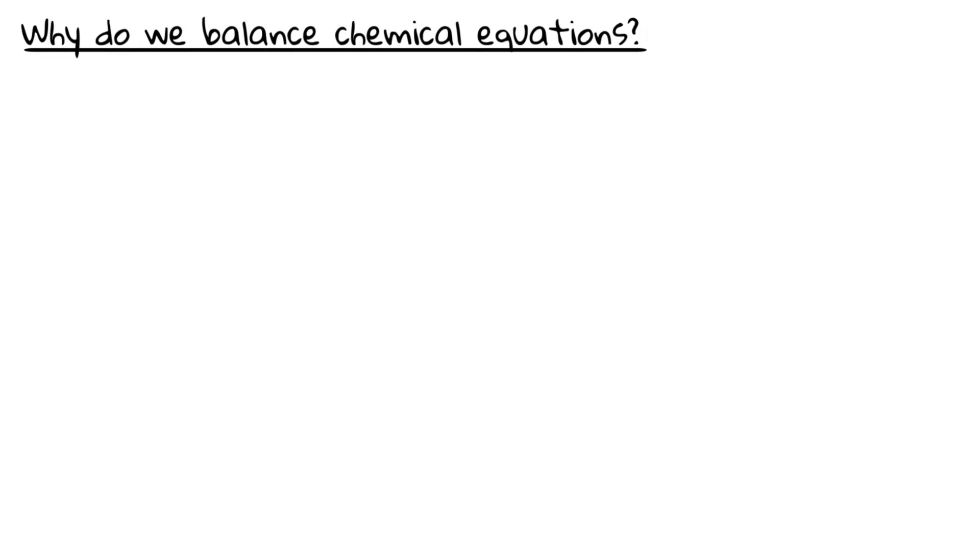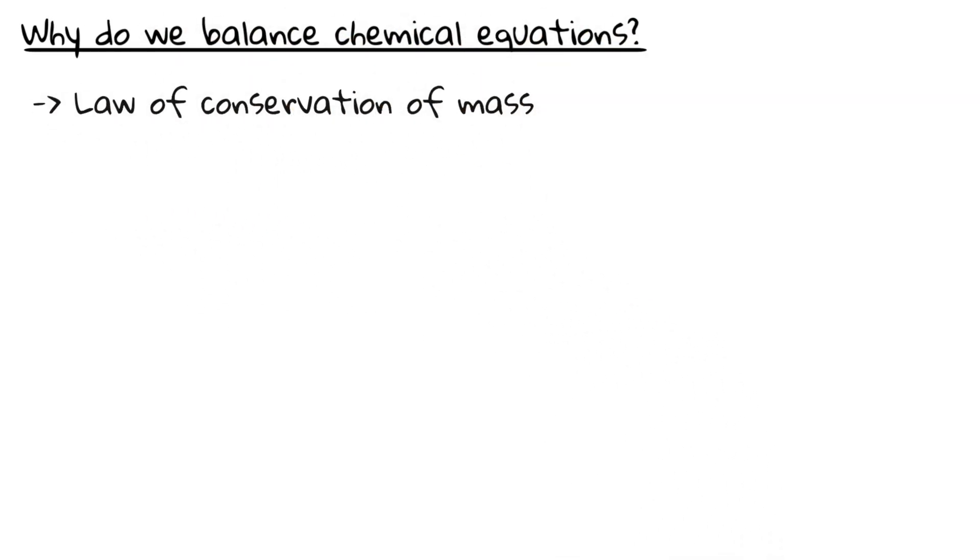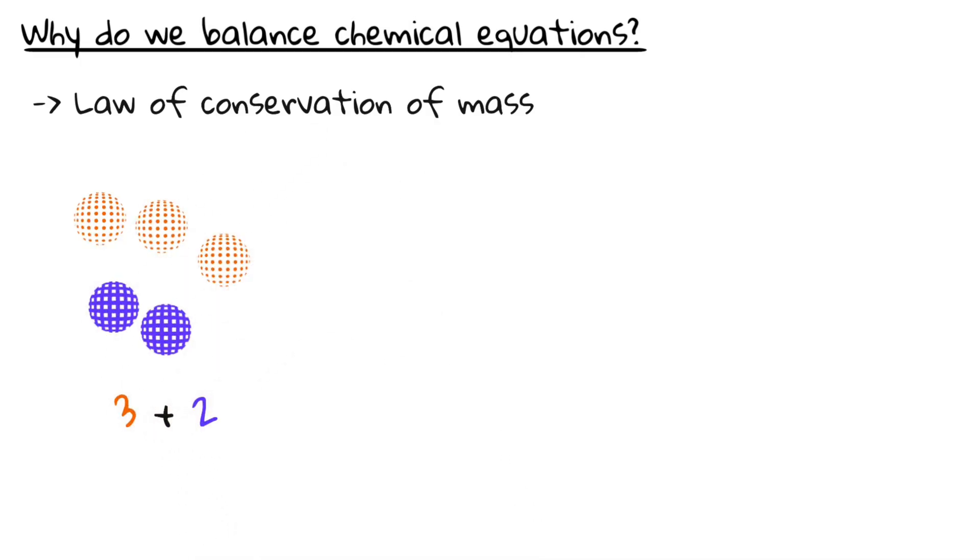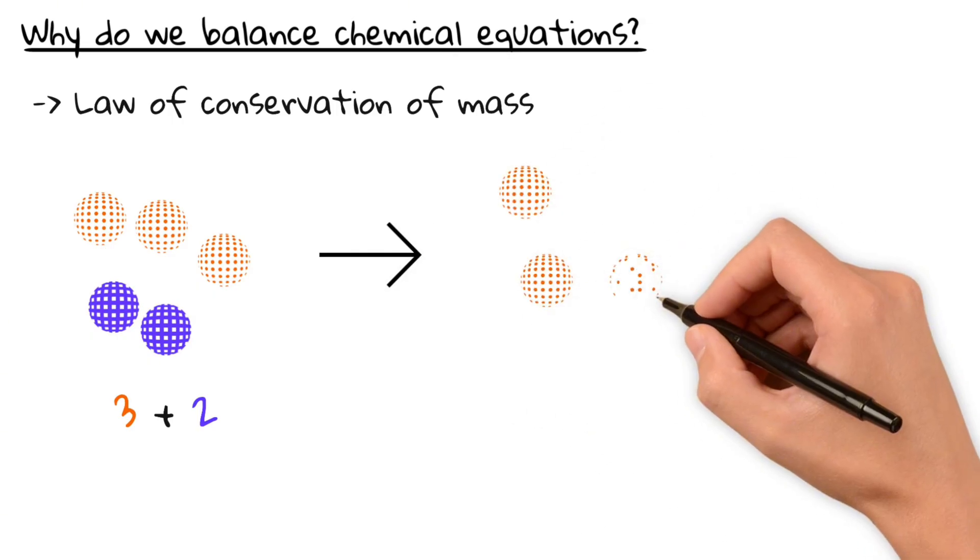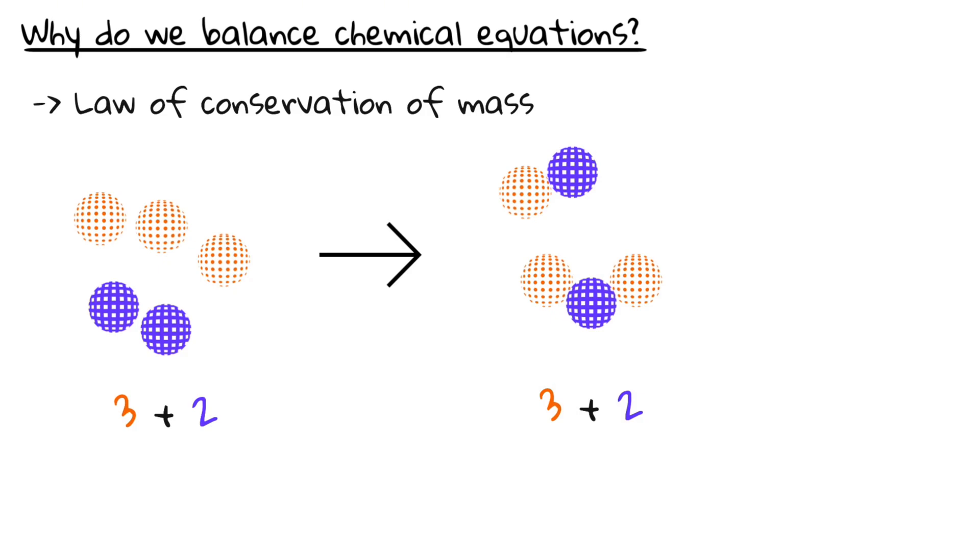Let's start with why equations must be balanced. In any chemical reaction, mass is conserved. This means that the number of atoms for each element must be the same before and after the reaction. Atoms don't just disappear and they don't appear out of nowhere. They just rearrange.